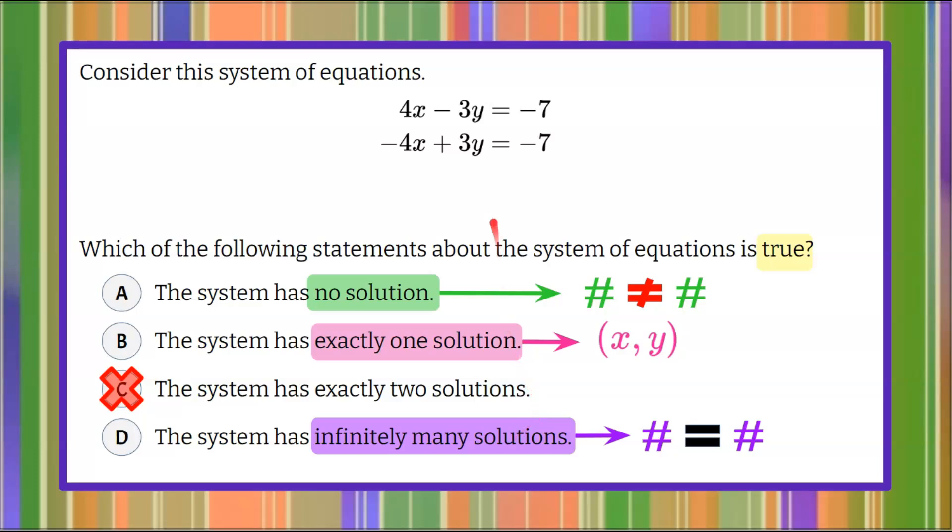Well, let's go up and solve our system so that we can determine which type of solution. So because 4 and negative 4, the coefficients of x, are opposites, I'm going to add. When I add these like terms, they are opposites and form a zero pair and are zero. So the x terms are eliminated.